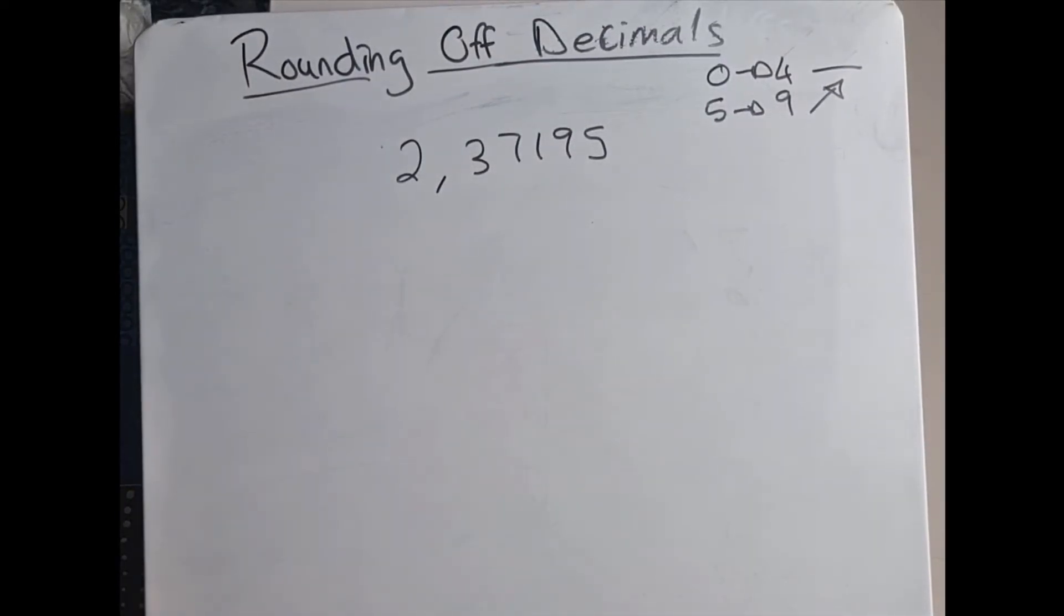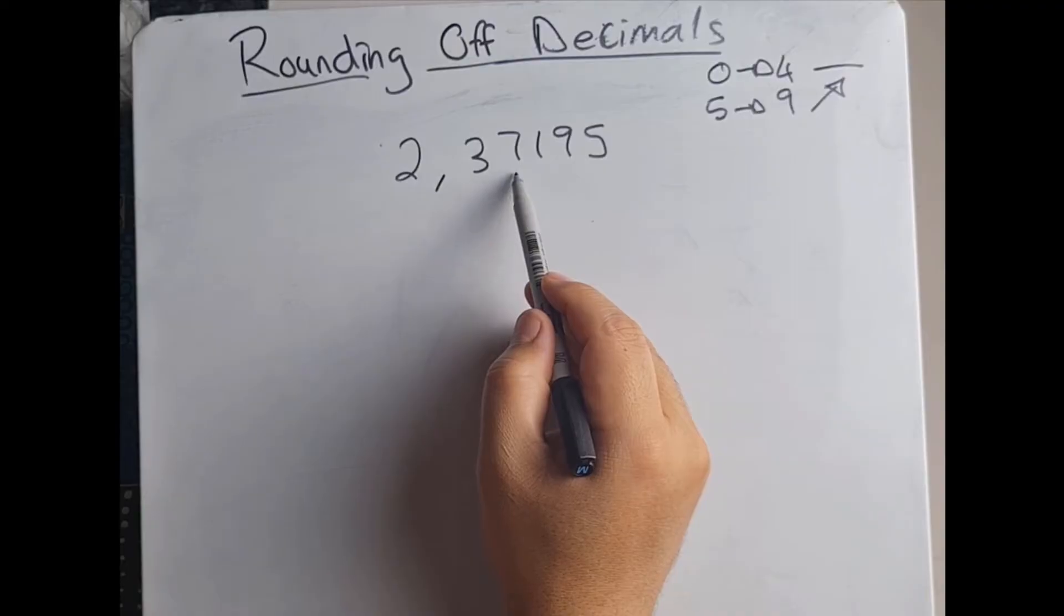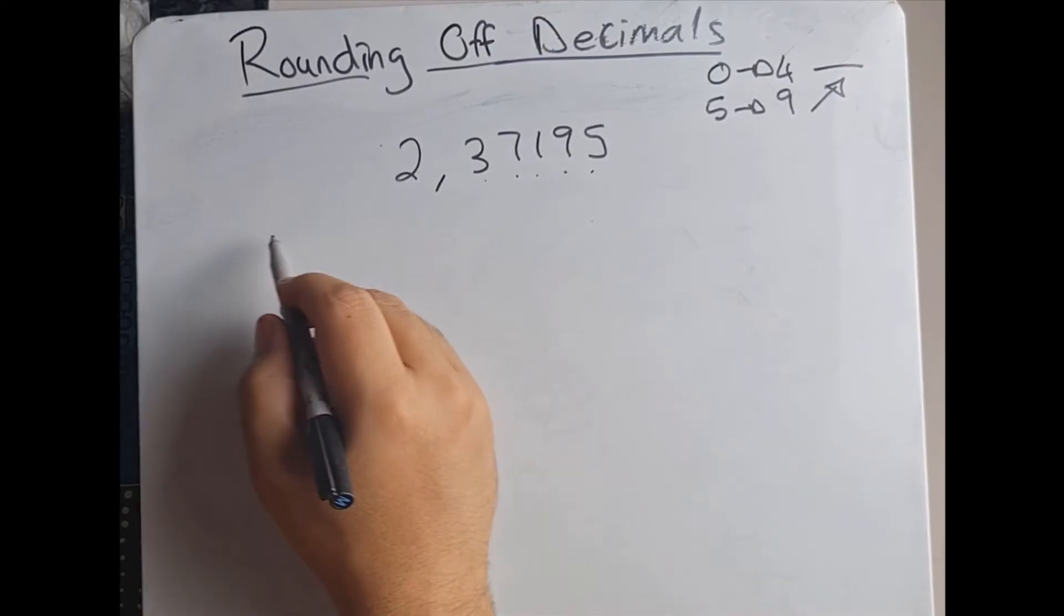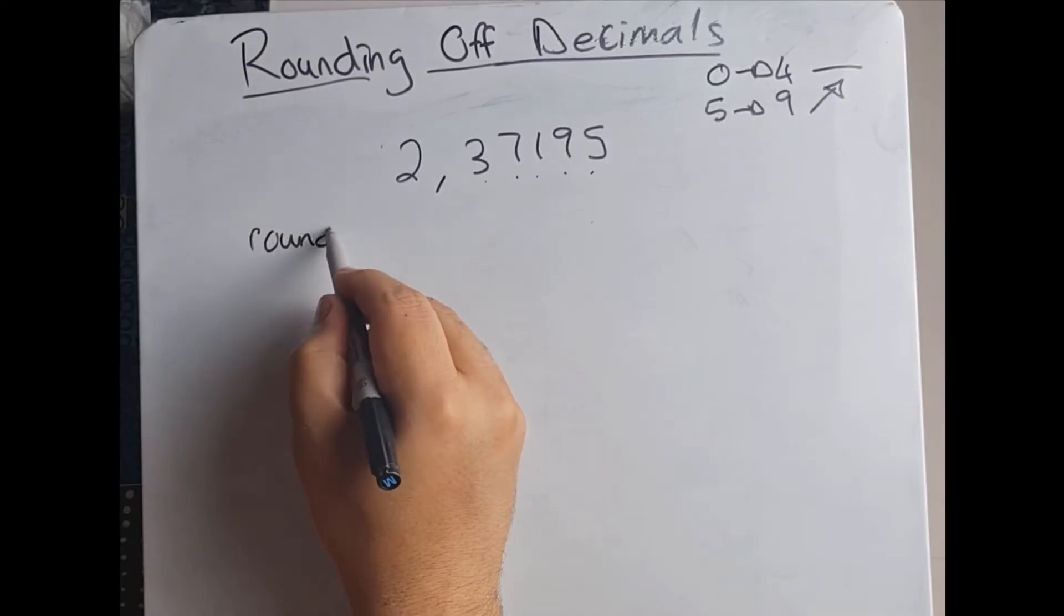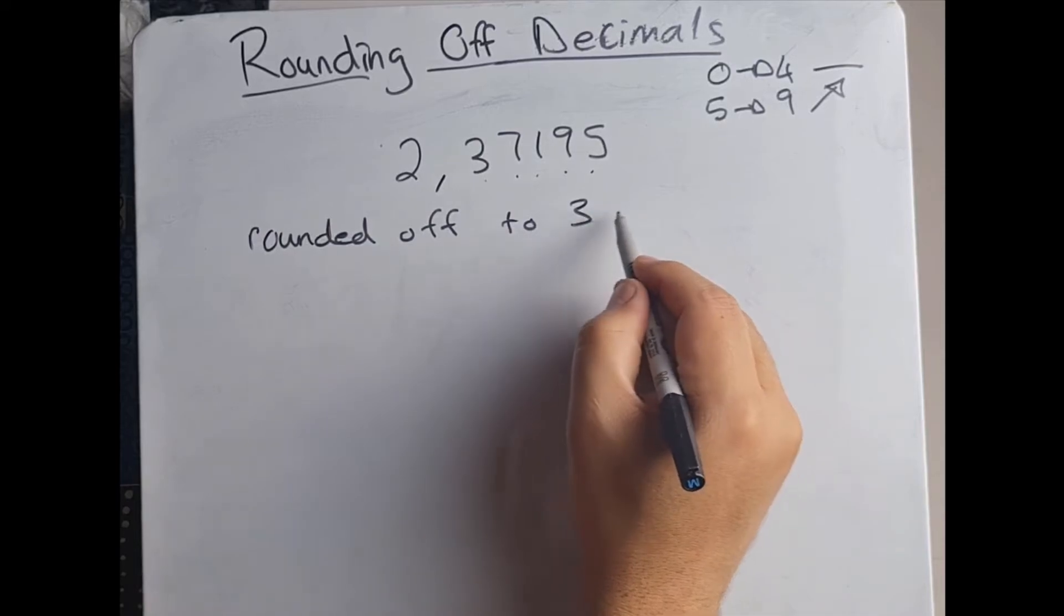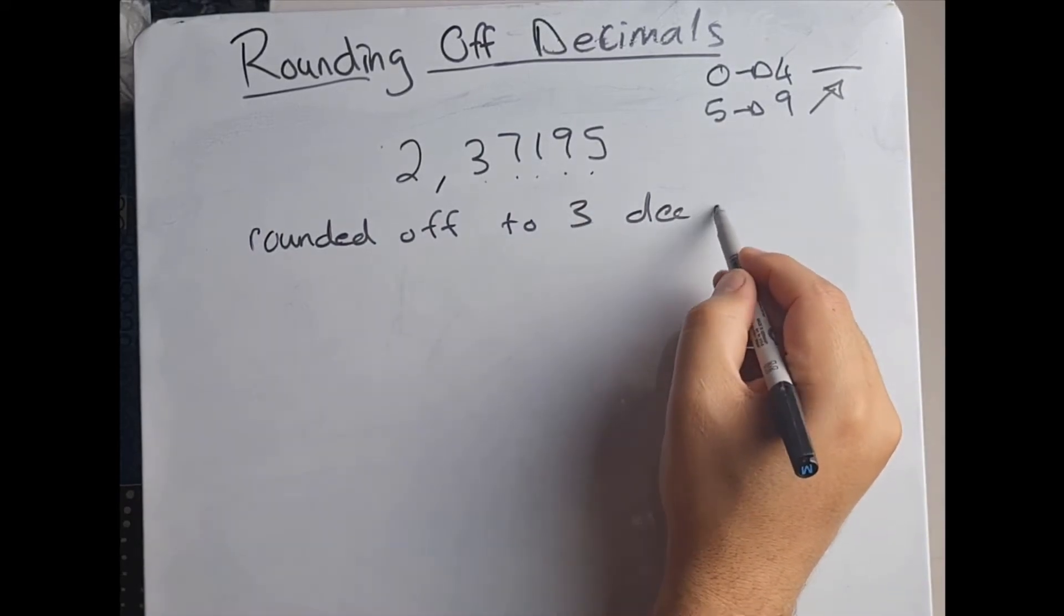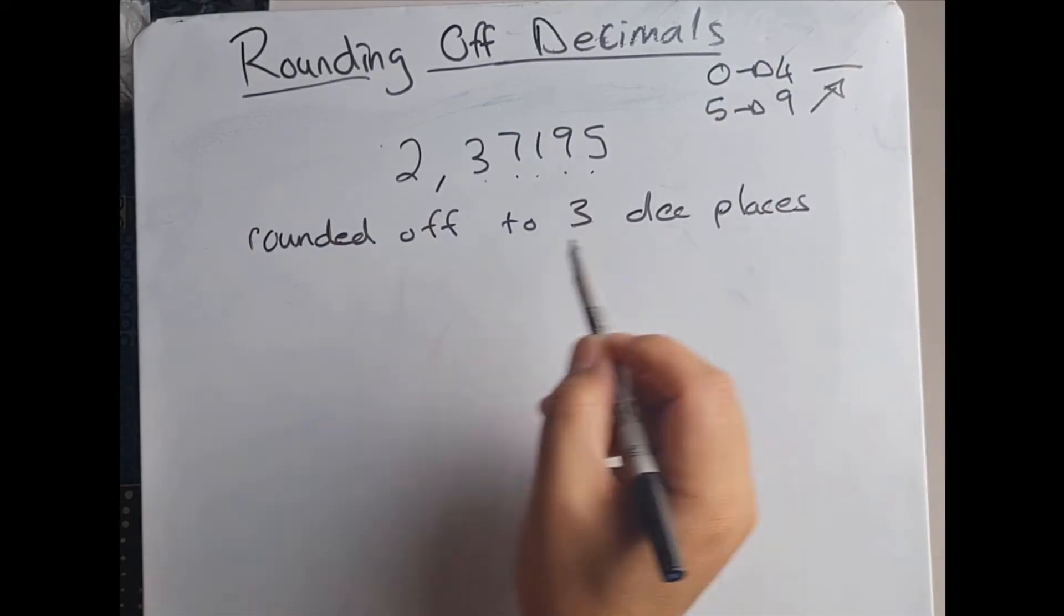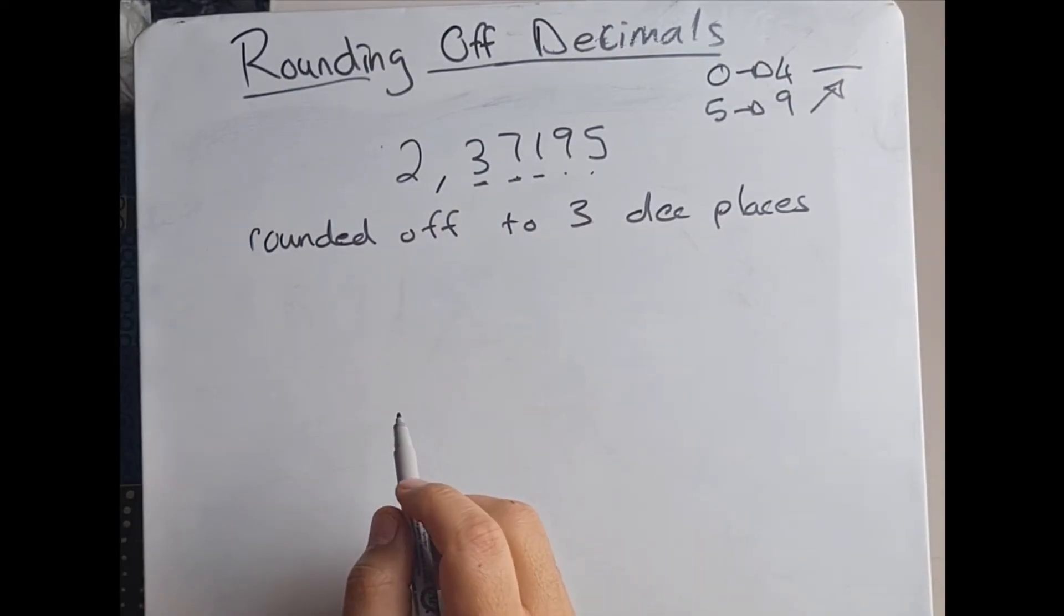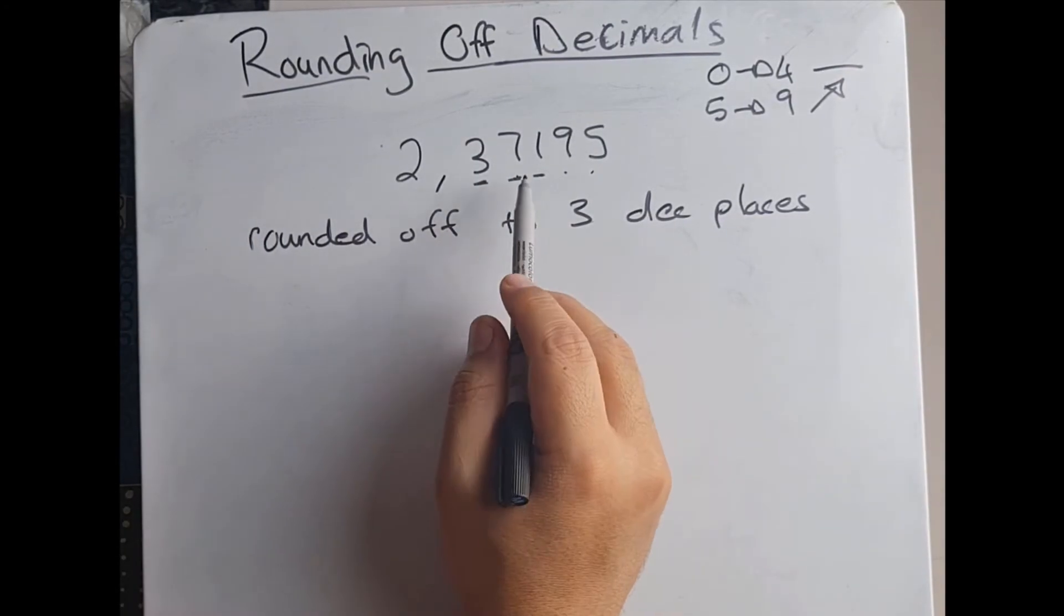When it comes to decimals they will usually tell you how many decimals they wanted rounded off to. In this case you can see we've got 1, 2, 3, 4, 5 decimal places. So what if they say to us they wanted it rounded off to three decimal places?